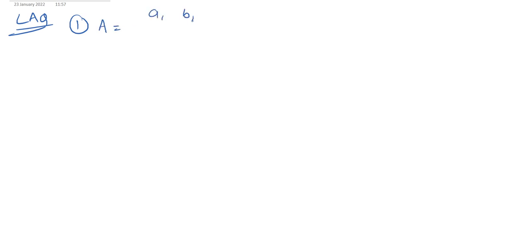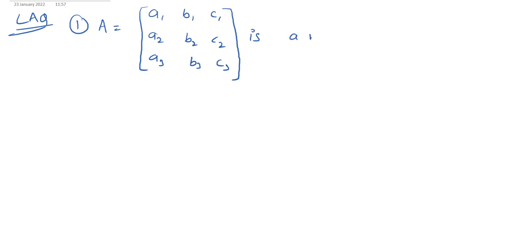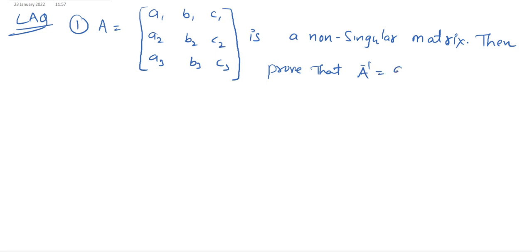First one: if capital A is equal to the matrix [A1, B1, C1; A2, B2, C2; A3, B3, C3] and A is a non-singular matrix, then prove that A inverse is equal to adjoint A by det A. This is the theorem — the first theorem in matrices.